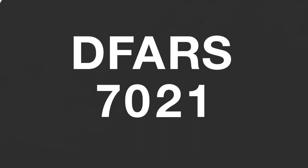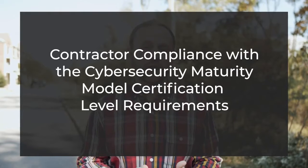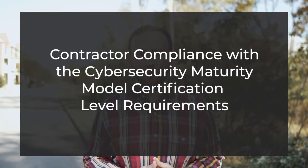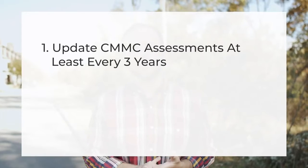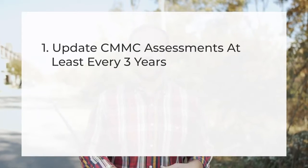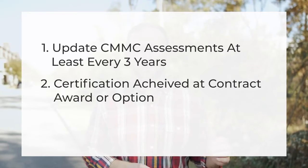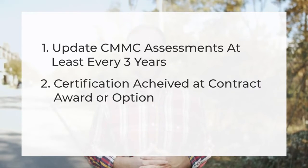This covers 7021, and there's a clean break where we start talking about CMMC finally. This particular clause is entitled Contractor Compliance with CMMC Level Requirements. It basically boils down to getting your assessments and making sure that they're updated at least every three years at contract award, or at option award for existing contracts.